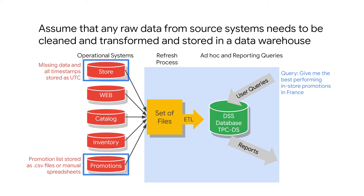Similarly, the promotions may not be stored in the transaction database at all — they might be just a text file that somebody loads on the web page with a list of codes used by the web application to apply discounts. It can be extremely difficult to get the best performing in-store promotions because the data has so many unique problems. Whenever you have data like this, you need to get the raw data and transform it into a form with which you can actually carry out the necessary analysis. It's best to do this cleanup and consolidation just once and store the resulting clean data — and that is the point of a data warehouse.